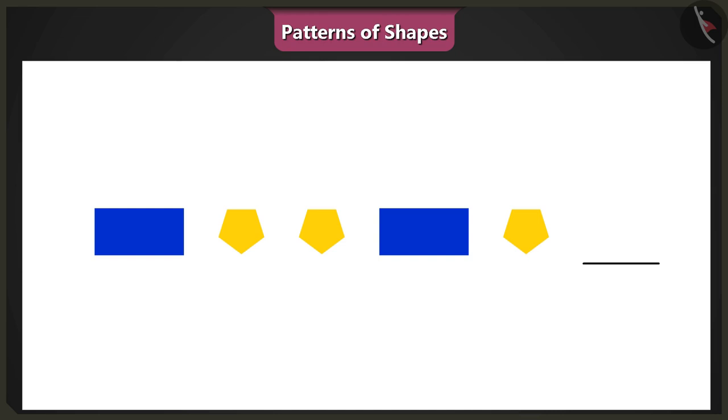Oh, wait. Look carefully. In this pattern, one rectangle is followed by two pentagons, and we need to repeat this pattern. Right, so the next shape in this pattern will be a pentagon. This way we get a pattern of one rectangle and two pentagons.